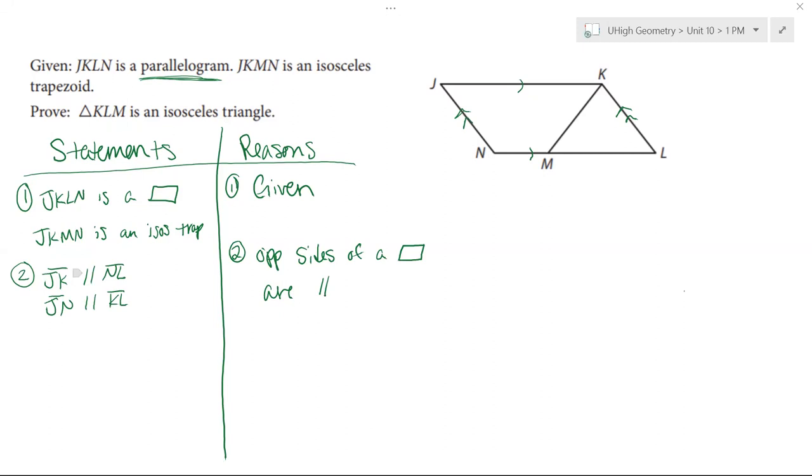So then I can think about what else do I know? What else is going to help me prove that I have an isosceles triangle KLM? Well, I also know since I have a parallelogram, my statement three, I know that segment JN is congruent to segment KL. And my reason number three is going to be that opposite sides of a parallelogram are congruent.